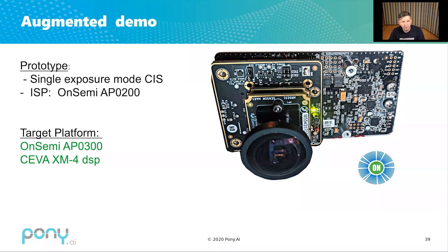This is the prototype, based on the AP 200 ISP from onsemi and using the AR 231 image sensor. The target platform will be AP 300, a much more powerful ISP with DSP on board.